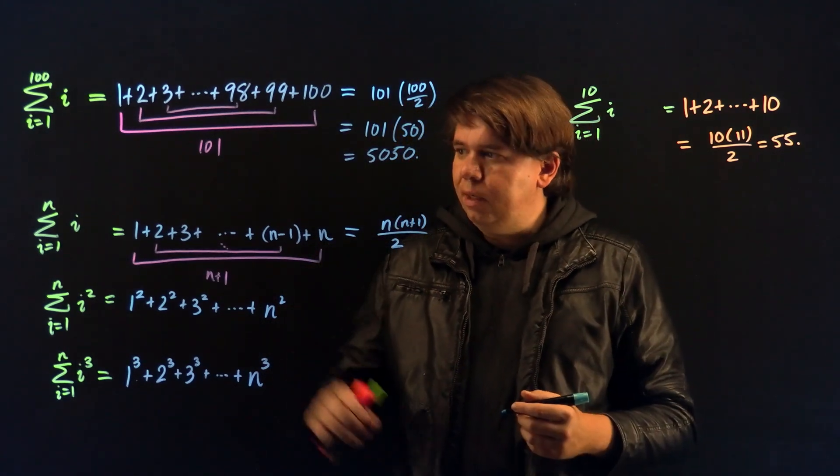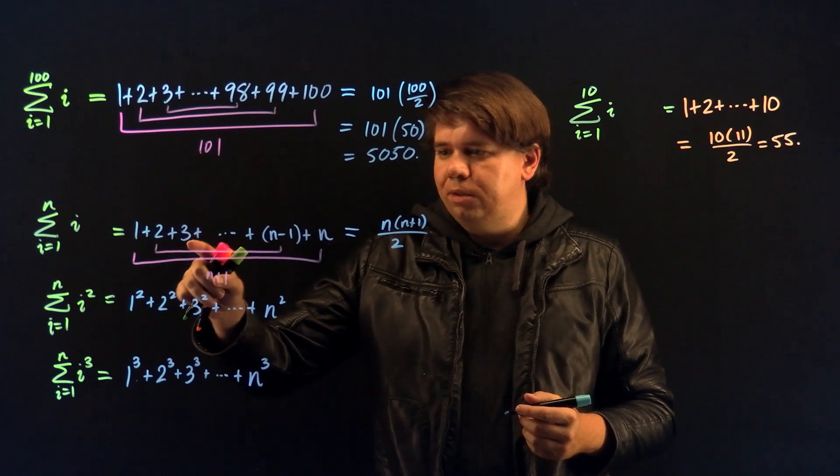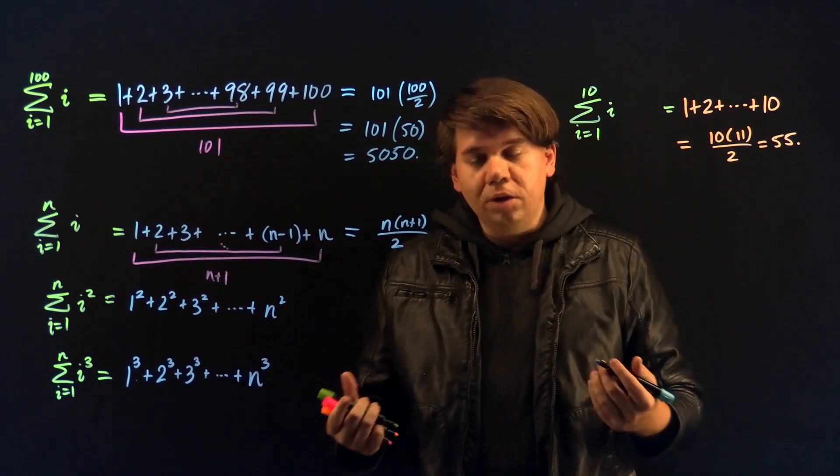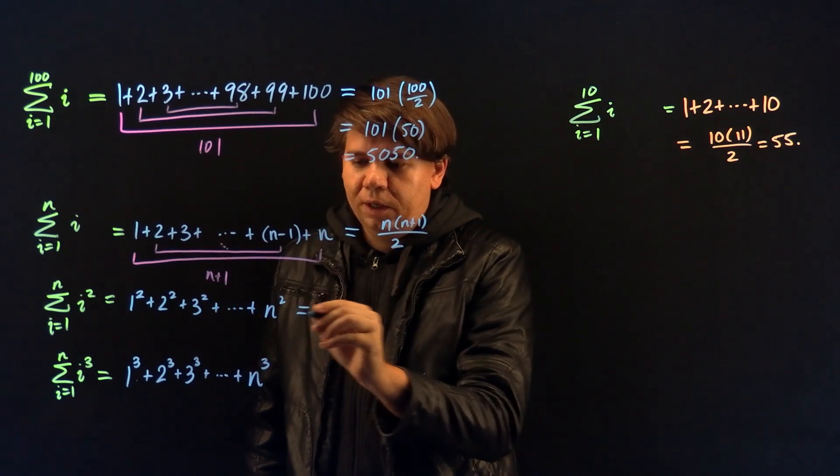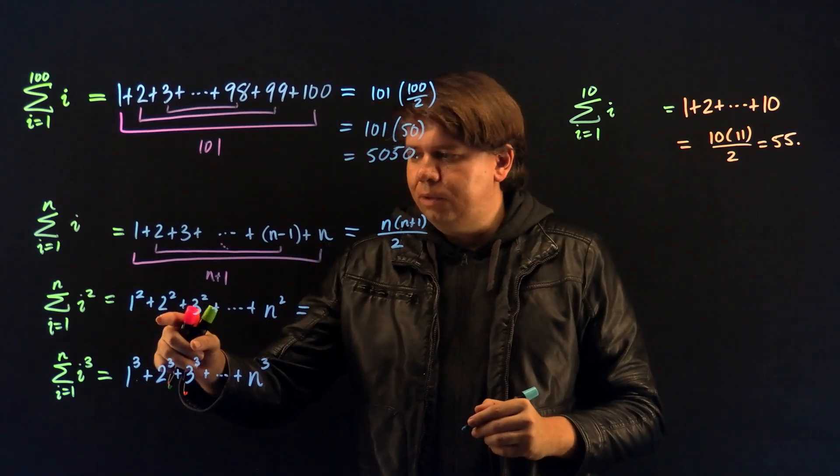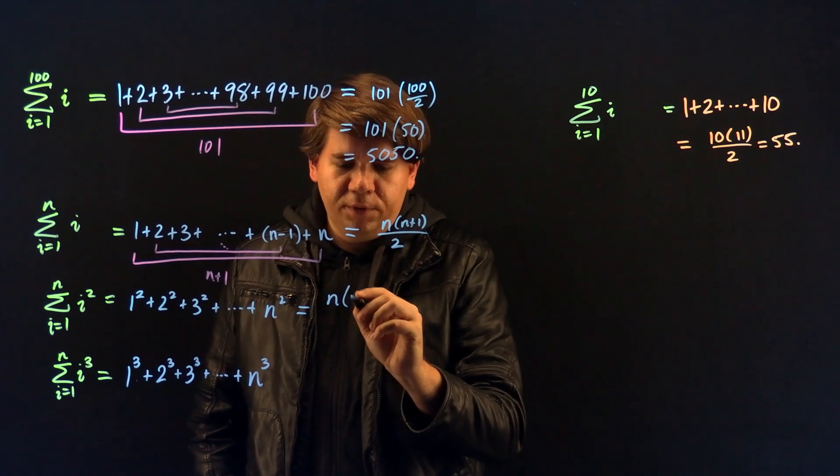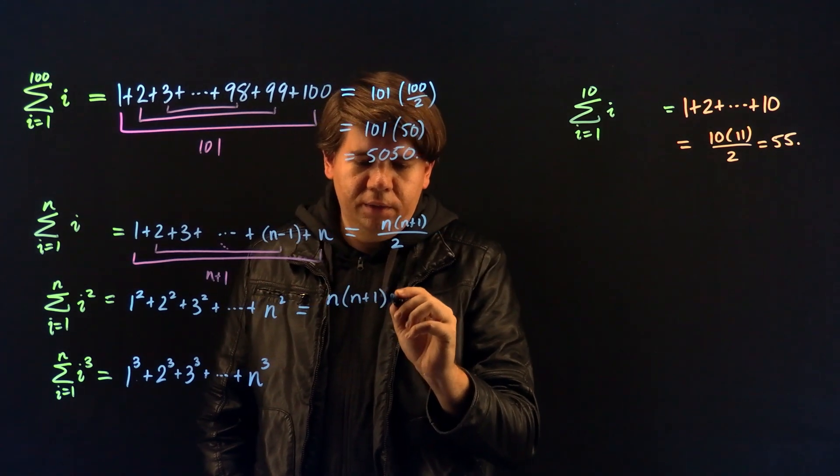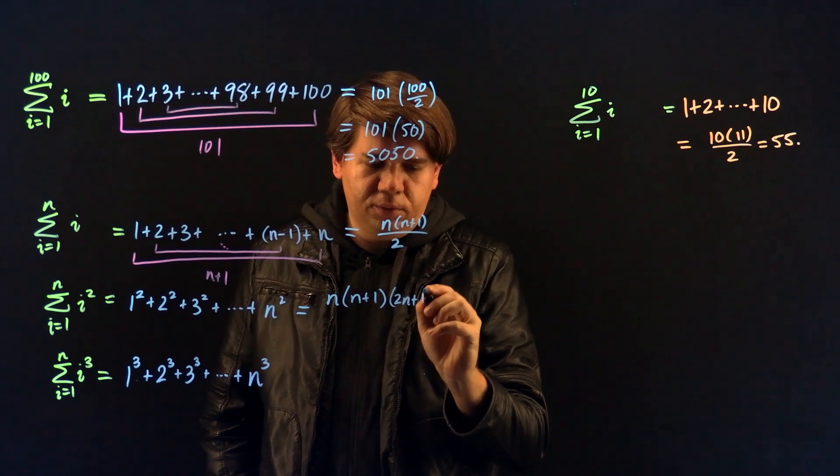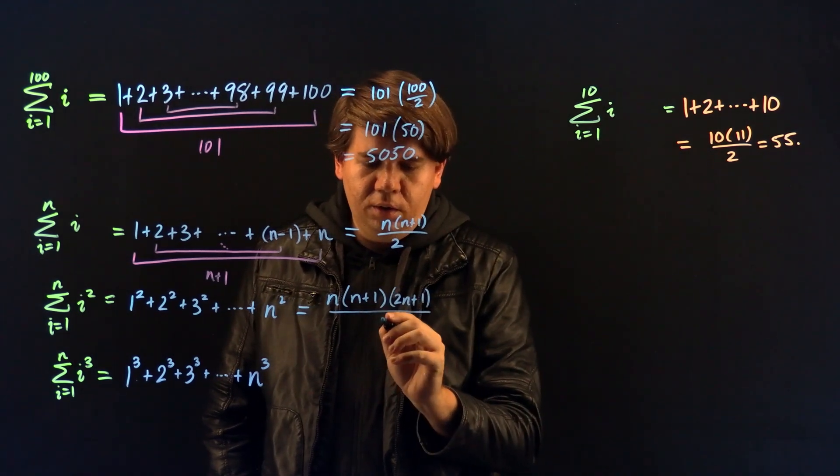Now, it turns out, just like there's a formula for the sum of 1 plus 2 plus 3 up to n, there are also formulas to give us shortcuts to figure out the sum of 1 squared plus 2 squared plus 3 squared through n squared. That formula turns out to be n times n plus 1 times 2n plus 1 all over 6.